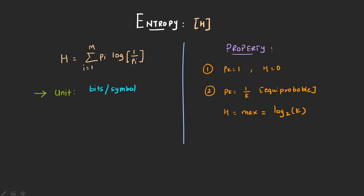Now let us talk about the properties. Whenever you study the properties, you just have to play with the equation. If I put probability equal to 1 in this equation, this term becomes log of 1 by 1, which is equal to 0. So this means that my entropy is 0. This aligns with information theory: if my probability is very high, my information is very less.